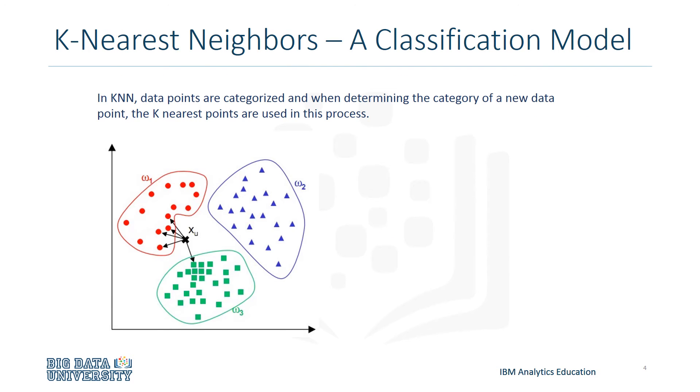In k-nearest neighbors, data points are categorized, and when determining the category of a new data point, the k-nearest points are used in this process. This means that based on the value of k, the classification of the point can change.